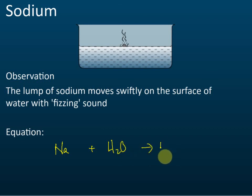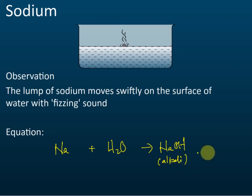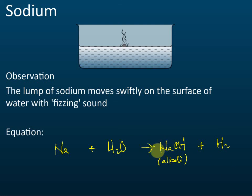The reaction produces sodium hydroxide, which is the alkali, and hydrogen gas is released at the same time. To balance the equation, we place a coefficient of 2 in front of sodium, sodium hydroxide, and water: 2Na + 2H₂O → 2NaOH + H₂.